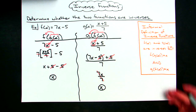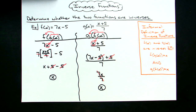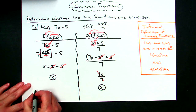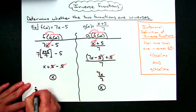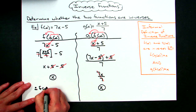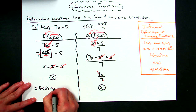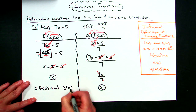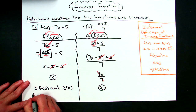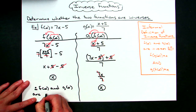By the informal definition, since both f of g of x and g of f of x simplify to x, f(x) and g(x) are inverse functions. Therefore, f(x) and g(x) are inverse functions.